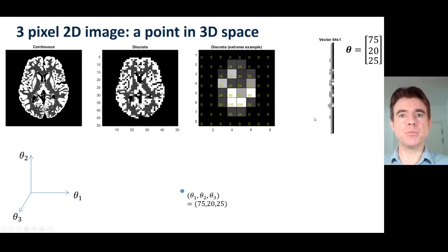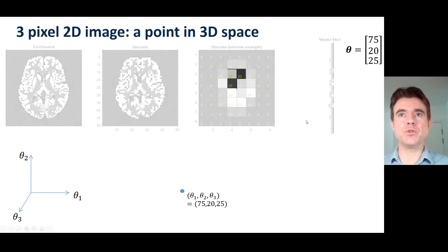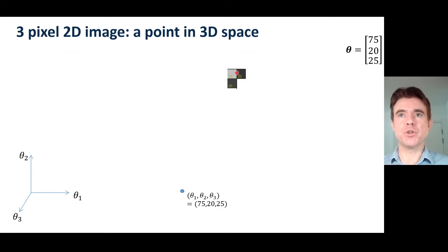Okay, so let's build up complexity a bit more. Now imagine I just had 3 pixels only. So now I'm showing 75, 20 and 25. So I could stack that in a column vector theta. Now it's a 3-dimensional vector theta with 3 values.